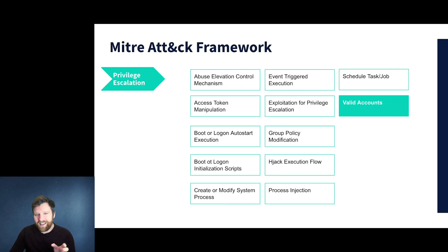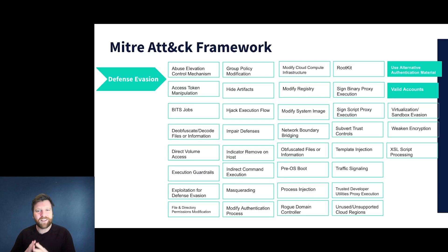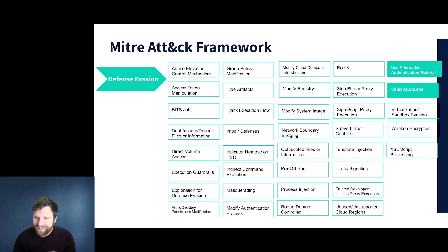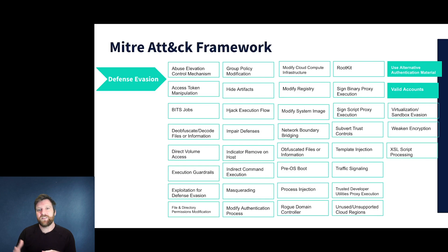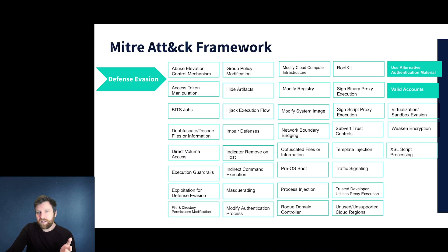Defense evasion is a huge list because there are many clever ways attackers need to evade detection — but in this case, they had valid accounts. They did use alternative authentication material when moving laterally into the Git account. There wasn't enough security setup on the UN side to require hiding: there was no two-factor authentication on the compromised accounts and no isolation of IPs and location. So there was really no need to use sophisticated defense evasion.